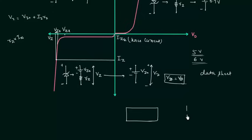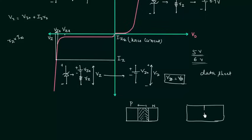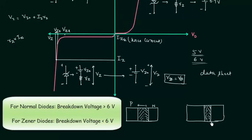If we draw the diagram for a normal diode and Zener diode, you can see the difference in the depletion layer. For the normal diode, this is the P side and this is the N side with its depletion layer. In case of the Zener diode, the depletion layer is much narrower. This narrow depletion layer is a key difference when comparing Zener diode to the normal diode.